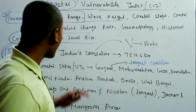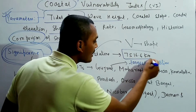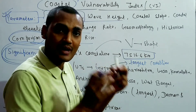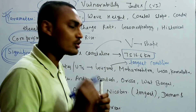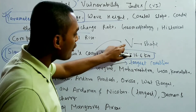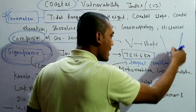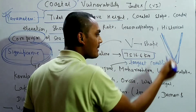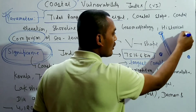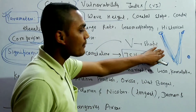Regarding basic facts about India's coastline: the total Indian coastline is around 7,516.6 kilometers. The coastline forms a V-shape on the Indian map, stretching from Gujarat in the west to West Bengal in the east, and also includes Lakshadweep and the Andaman and Nicobar Islands.